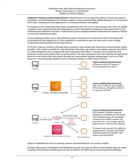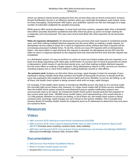To further improve resiliency through loose coupling, make component interactions asynchronous where possible. This model is suitable for any interaction that does not need an immediate response and where an acknowledgement that a request has been registered will suffice. The two components do not integrate through direct point-to-point interaction but usually through an intermediate durable storage layer, such as an SQS queue, Amazon Kinesis, or AWS Step Functions. Amazon SQS queues and Elastic Load Balancers are just two ways to add an intermediate layer for loose coupling. Event-driven architectures can also be built using Amazon EventBridge. Amazon SNS is an effective solution when you need high-throughput, push-based, many-to-many messaging. In most hard real-time systems, requests older than a threshold time should be considered stale and not processed.